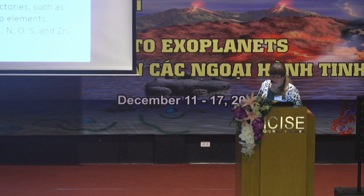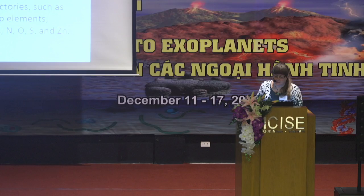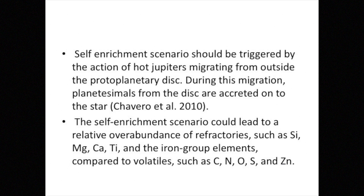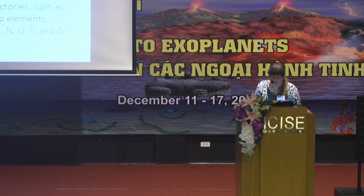It is believed that the origin of the abundance of metals is related to the accretion of rocky planetesimals onto the star. The self-enrichment scenario should be triggered by the action of hot Jupiters migrating from outside the planetary disk. During this migration, planetesimals from the disk are accreted onto the star. This could lead to relative overabundances of refractory chemical elements such as silicon, magnesium, calcium, titanium, and iron group elements in comparison to volatiles such as carbon, nitrogen, and oxygen.